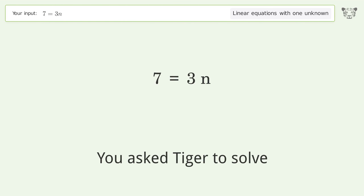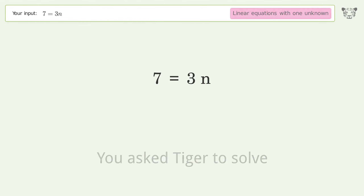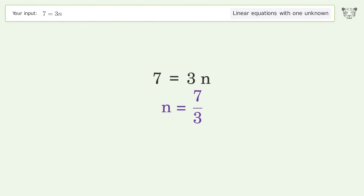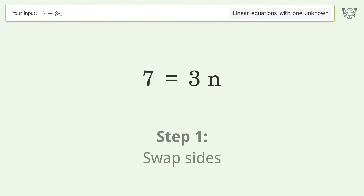Tiger is asked to solve a linear equation with one unknown. The final result is n equals 7 over 3. Let's solve it step by step — swap sides.